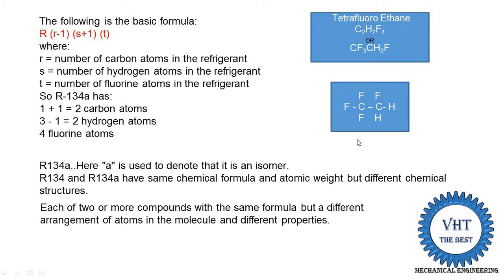For example, one property that changes is the normal boiling point. R134a has a normal boiling point of about -19°C, whereas R134 has a normal boiling point of about -26°C.